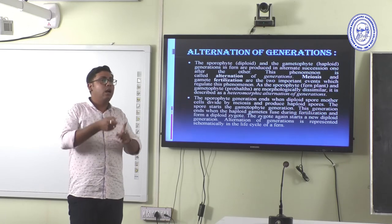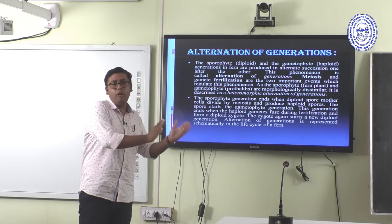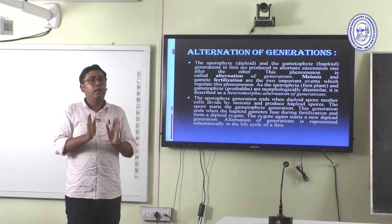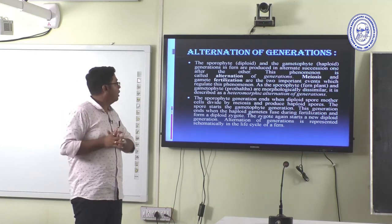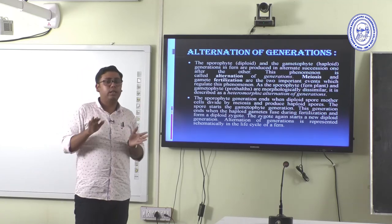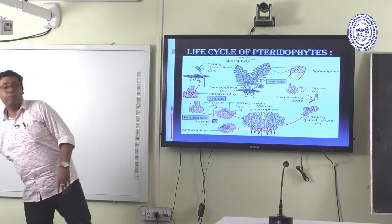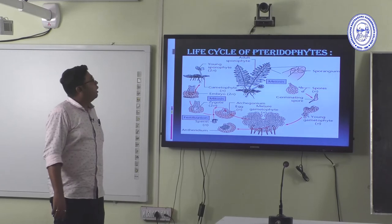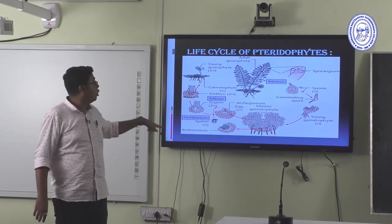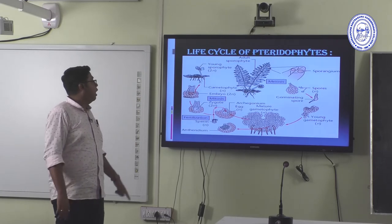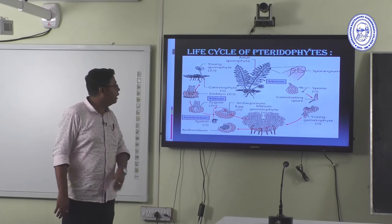The sporophytic generation ends when the diploid spore mother cell divides by meiosis to produce haploid spores, which start the gametophytic generation. This generation ends when the haploid gametes fuse during fertilization to form a diploid zygote. The two main events are fertilization (2N formation) and reduction division (meiosis, 2N to N).